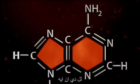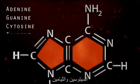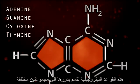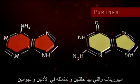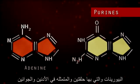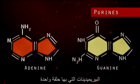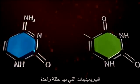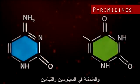There are four nitrogen bases in DNA: adenine, guanine, cytosine, and thymine. Those four nitrogen bases are divided into two different classes. The purines have double rings and are made up of adenine and guanine. The pyrimidines have a single ring and are made up of thymine and cytosine.